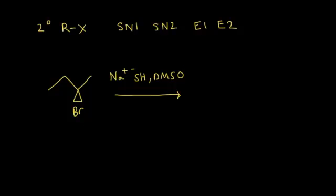The first step is to always look at the structure of your alkyl halide. If you have a secondary alkyl halide, all four mechanisms are possible: SN1, SN2, E1, or E2.